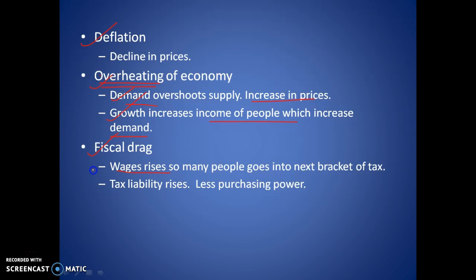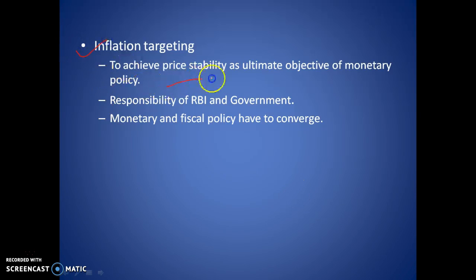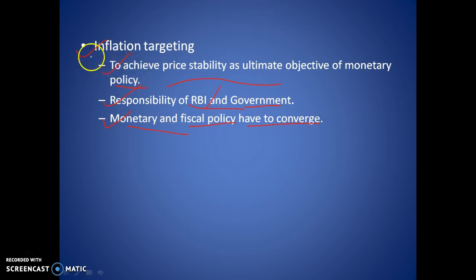Fiscal drag is a concept where wages increase so people move into the next tax bracket — for example, if your wage increases from 9 lakh to 10 lakh, you move into the 20% tax bracket. Your tax liability rises much more than your salary, so you have less purchasing power. Then we have inflation targeting to achieve price stability as the ultimate objective of monetary policy, which is the responsibility of the RBI. Monetary and fiscal policy must converge for effective inflation targeting.